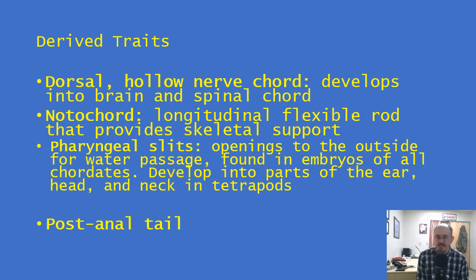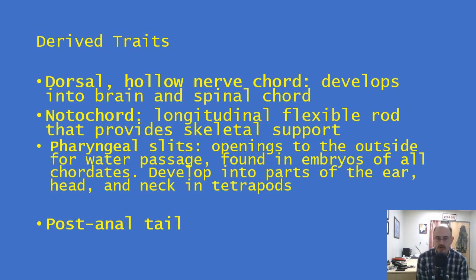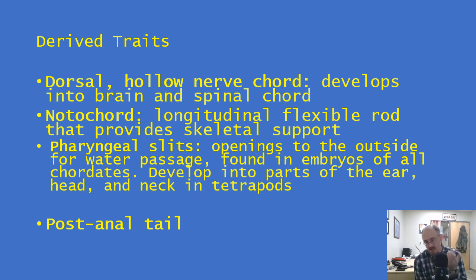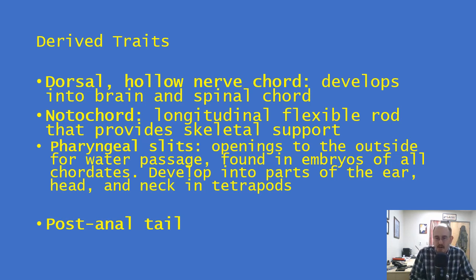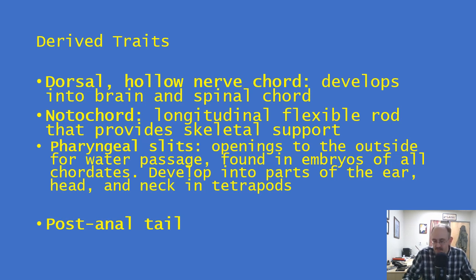We also have pharyngeal slits — openings to the outside world that allow for water passage. They're found in the embryos of all chordates. In humans, they often develop into parts of the ear and neck, or in tetrapods generally. In fish, they develop into gills. We also all have, at some point, a post-anal tail. We can see a diagram of this showing the dorsal hollow nerve cord, the notochord, the pharyngeal slits, and the post-anal tail.